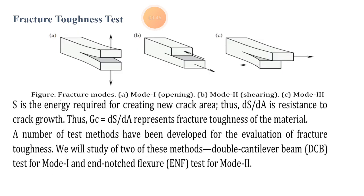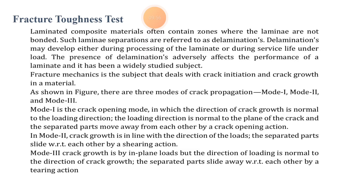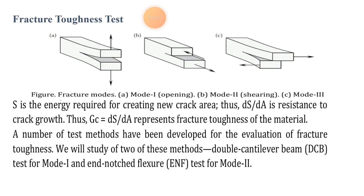There are three modes of crack propagation. Mode 1 is the crack opening mode. Mode 2 is crack growth in-line (shearing). Mode 3 is crack growth in-plane loading. S is the energy required for creating new crack area. dΓ/da is the resistance to crack growth. Gc equals dΓ/da and represents the fracture toughness of the material. A number of test methods have been developed for evaluating fracture toughness.